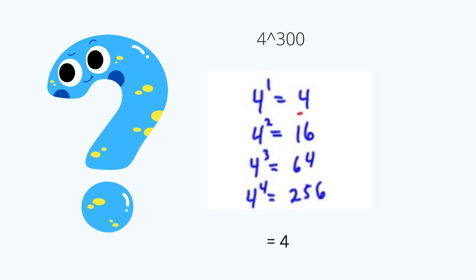The 1st power is 4, the 2nd power is 16, the 3rd power is 64, and 4 to the 4th power is 256. So the unit's digits of 4 raised to 300 is 4.